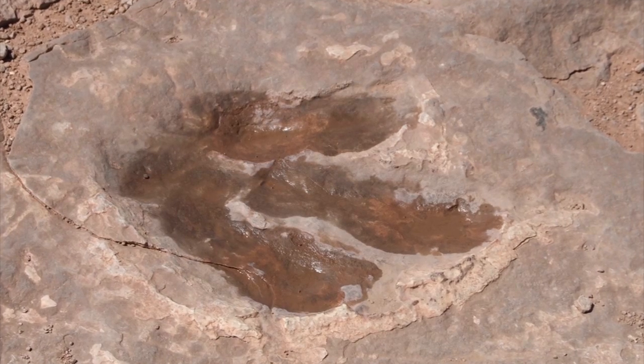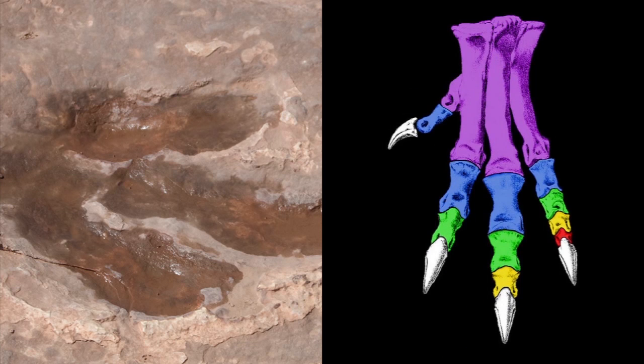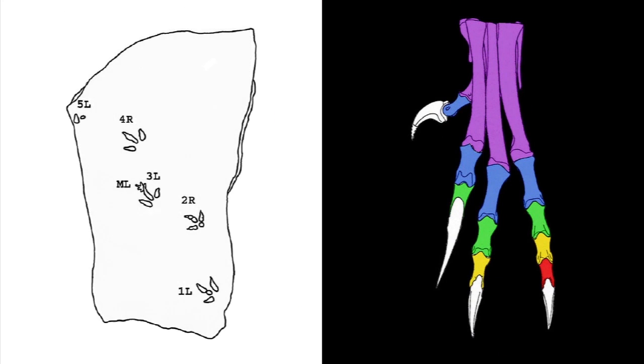Dinosaur footprints tell us a lot about their mobility, but static fossilized tracks were made by dynamic moving feet, flexing and pulling at the sediment. That means the impressions they left can only tell us so much about the dinosaur's actual foot.